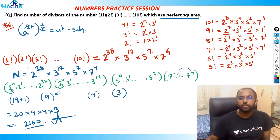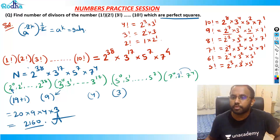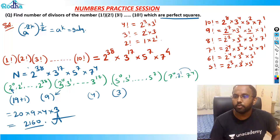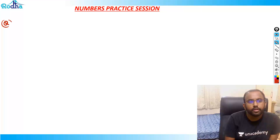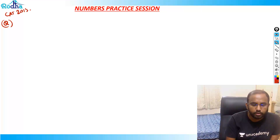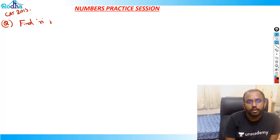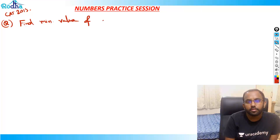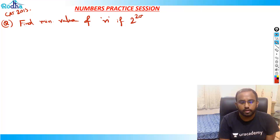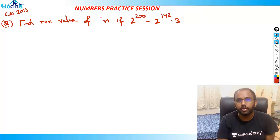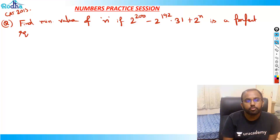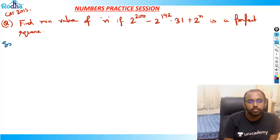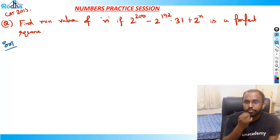So 2160 is the answer. It's a very nice question — tests all your basic fundamentals with a bit of fast calculation as well. One more question we can do here. This is from CAT 2015. Find the minimum value of n if 2^200 − 2^192 × 31 + 2^n is a perfect square.